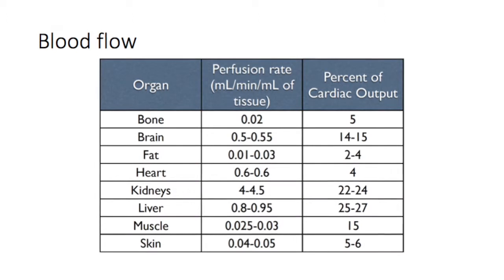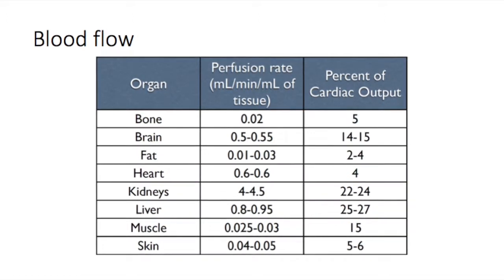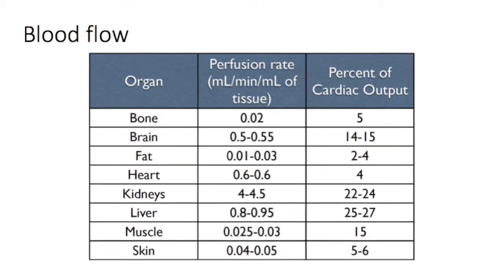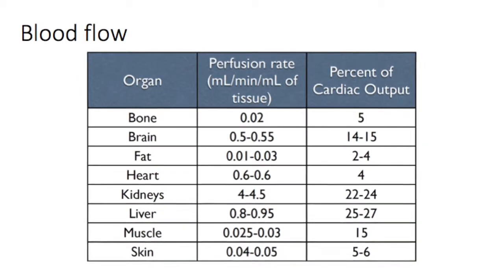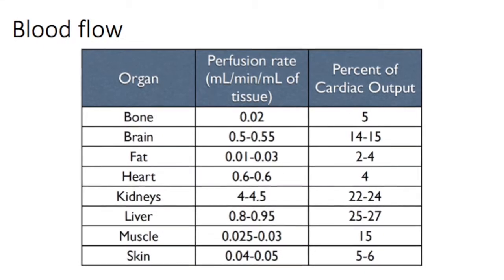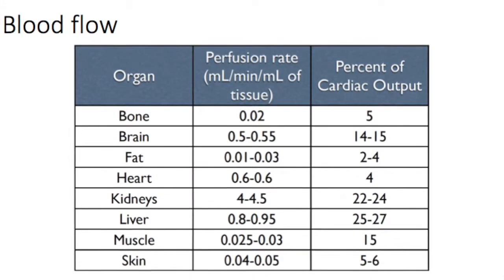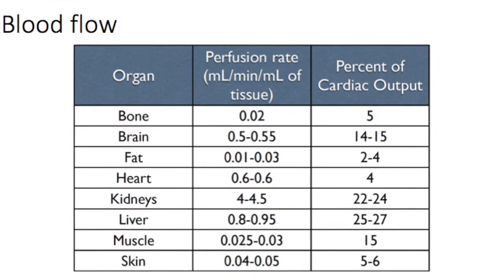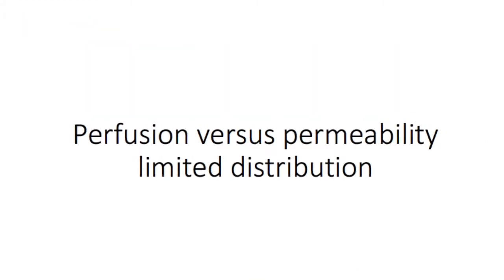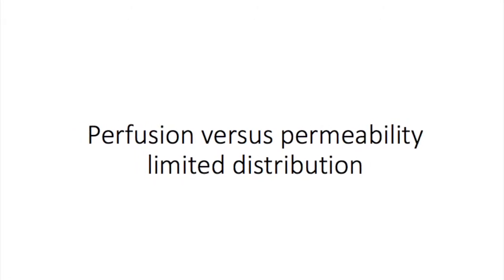This slide shows blood flow to different tissues in the body. Some tissues like the brain, heart, liver, and kidneys receive a lot of blood per unit time in proportion to their size — we consider these to be highly perfused. Other tissues like muscle, bone, and fat receive less blood per unit time. This brings us to the classification of drug diffusion as being either perfusion-limited or permeability-limited.